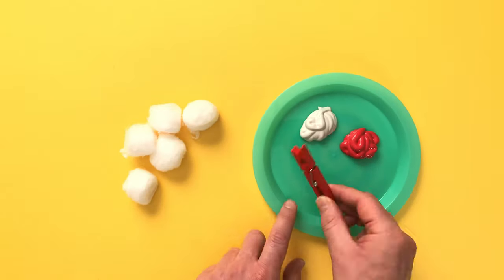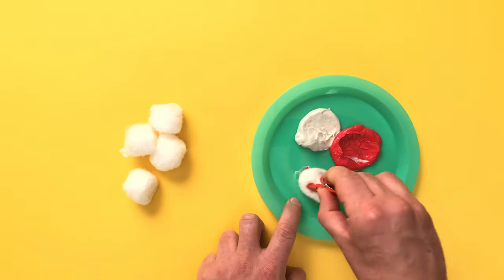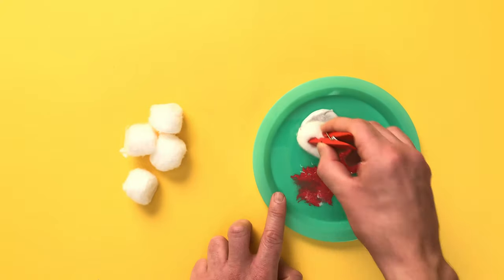Use a clothes peg to pick up some cotton wool and carefully dip it into the red and white paint and give it a mix.